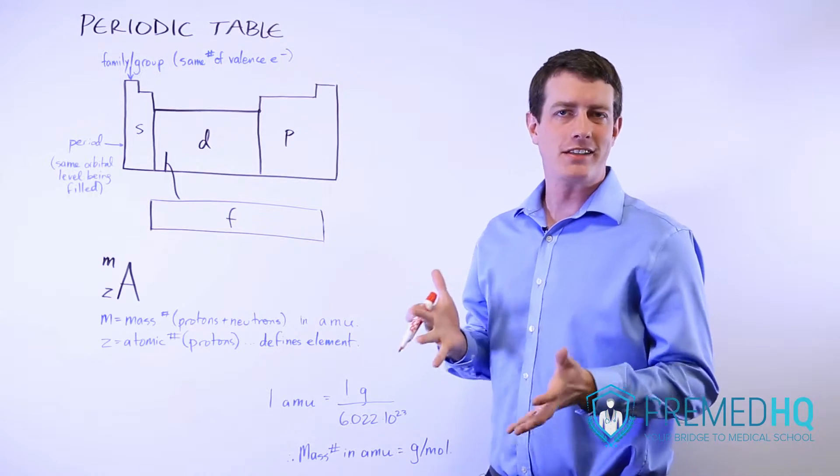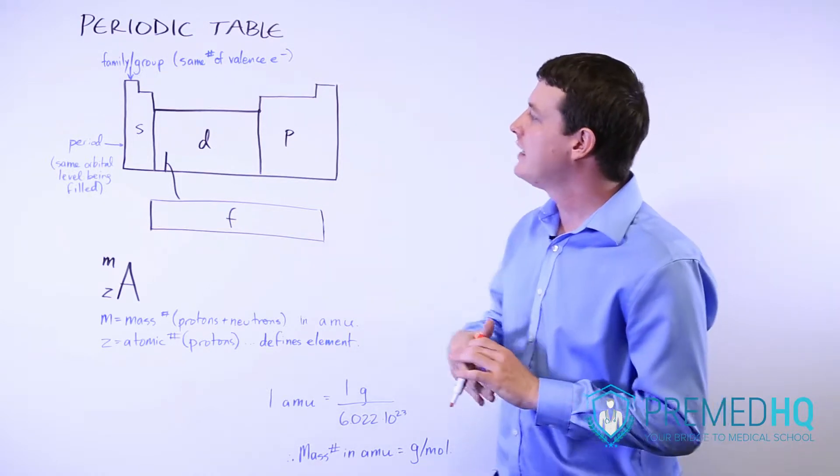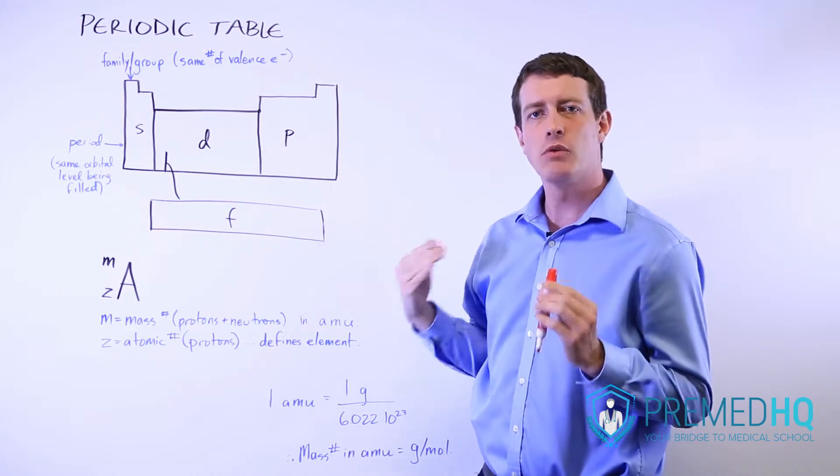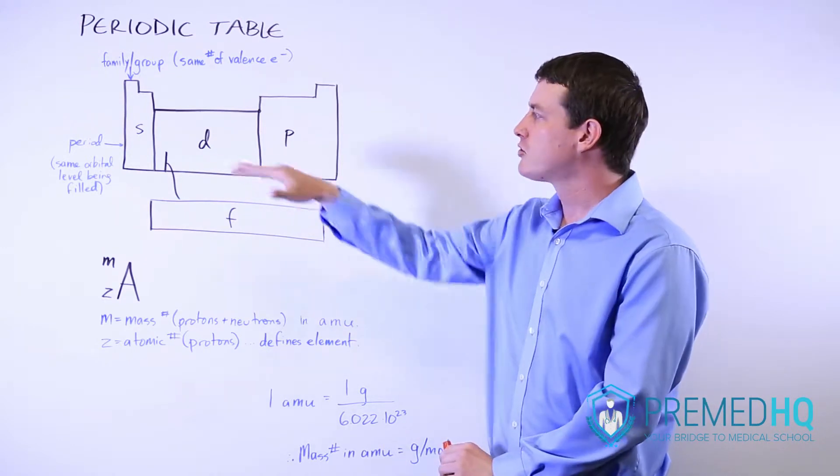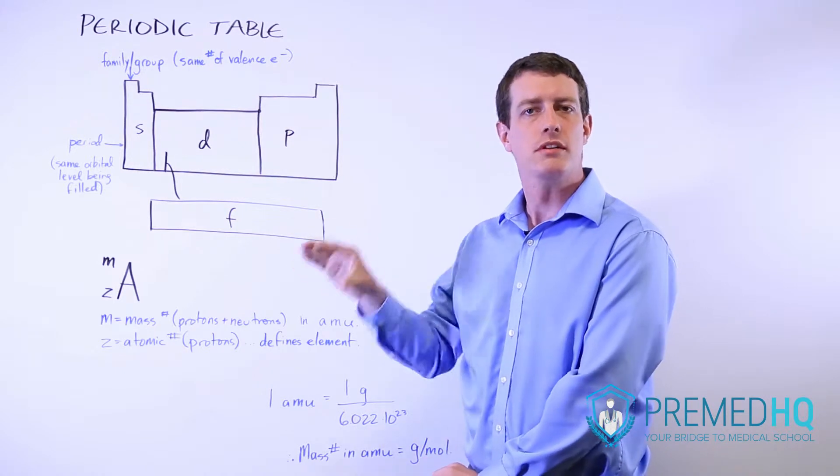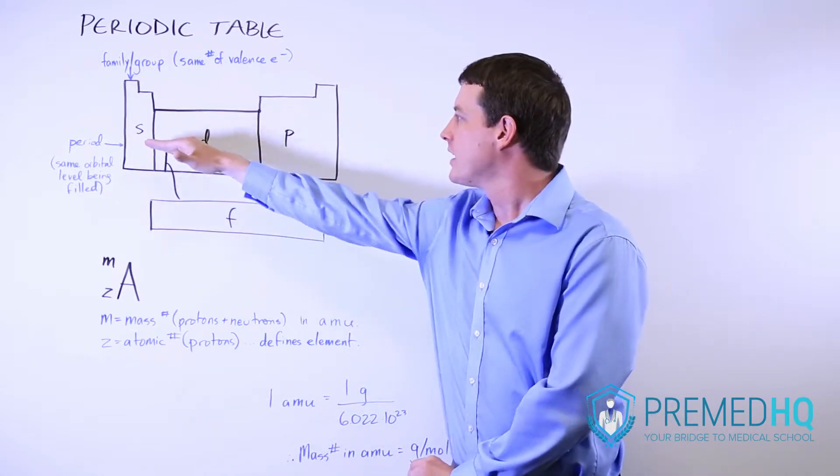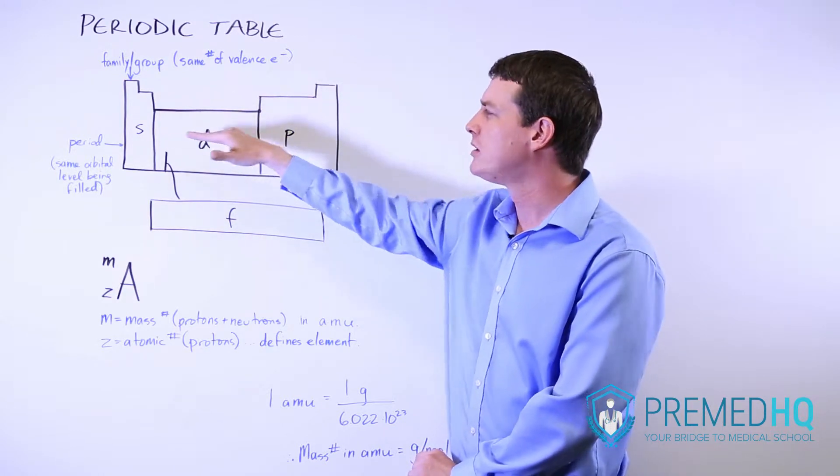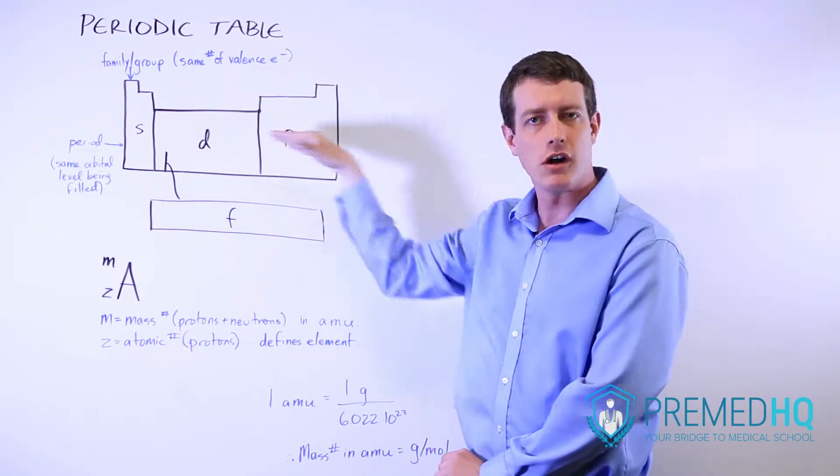There are certain groupings in the periodic table you should be aware of. Anything in the same row is considered in the same period, and what that means is that the electrons in that row are filling the same orbital level. So they have the same level of completed orbitals underneath that, and they are filling the same orbital energy level as you move across that row.